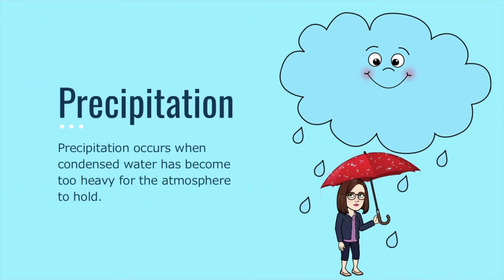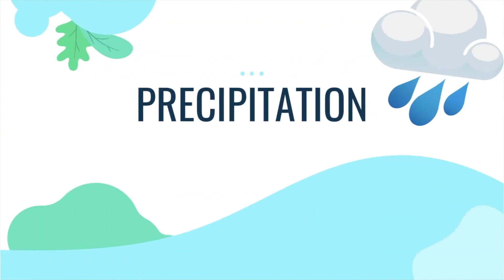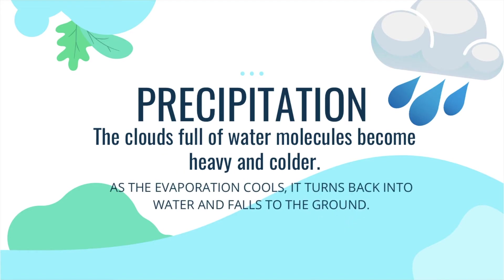Precipitation occurs when condensed water has become too heavy for the atmosphere to hold. The clouds full of water molecules become heavy and colder. As the evaporation cools, it turns back into water and falls to the ground.